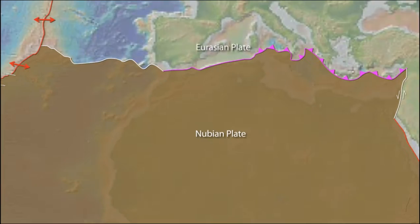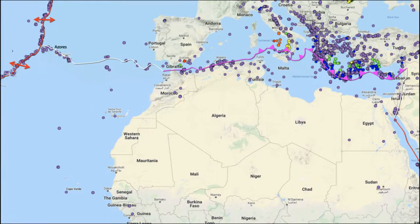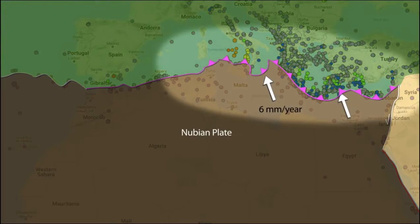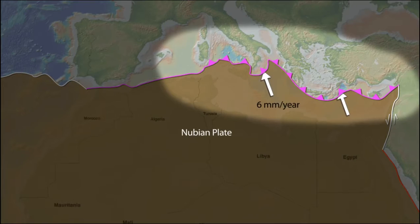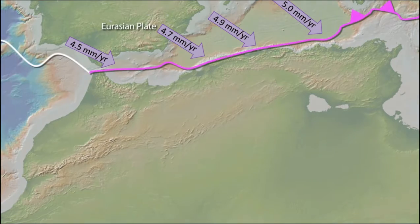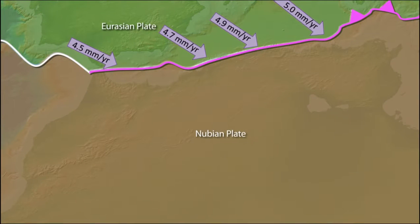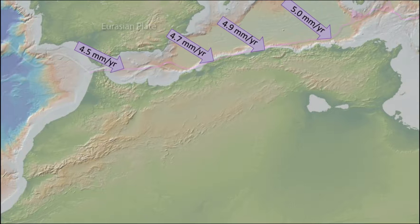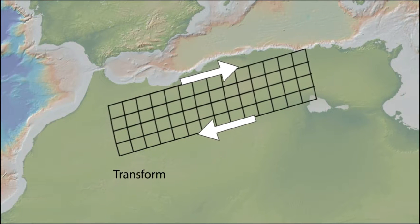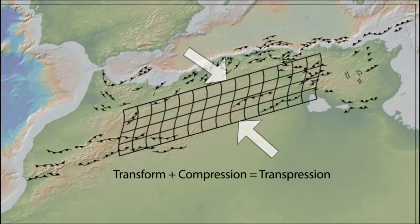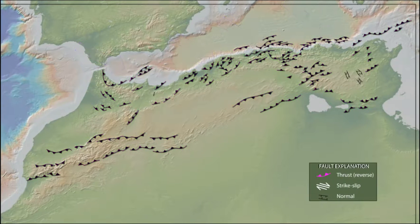The boundary between the Nubian and Eurasian plates is another region of frequent earthquakes. The plate boundary from the Azores to west of Gibraltar is dominated by transform motion. In the eastern Mediterranean, the oceanic lithosphere of the Nubian plate subducts beneath southern Italy, Greece, and Turkey. GPS observations show the Eurasian plate colliding with the Nubian plate at rates increasing from west to east. Resulting deformation across the Atlas Mountains is a combination of transform motion and compression, creating a zone of transpression. Resulting thrust faults are roughly parallel to the Atlas Mountains, with strike-slip faults cutting across that trend.